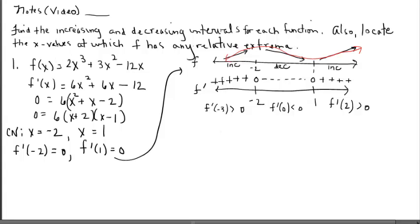At minimum, to use the first derivative test, we need to find the derivative, establish the critical numbers, and build the f prime number line. And then from there, the f prime number line itself isn't the final answer to our problem — it's using that to answer the questions of increasing, decreasing, and relative extrema.